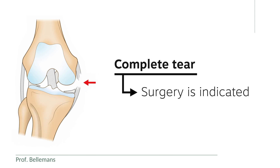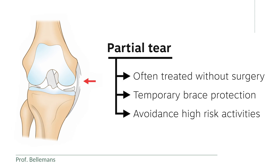For each of these ligaments, surgery is usually indicated in case of a complete tear. Partial tears can often be treated without surgery, by temporary brace protection and avoidance of high-risk activities, until the ligament has healed and full stability is regained.